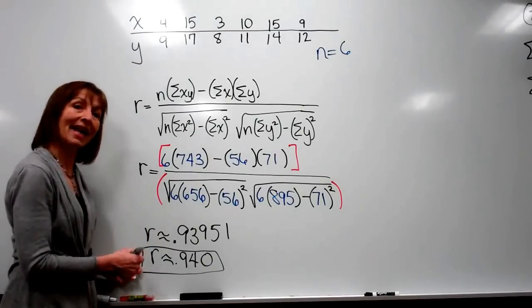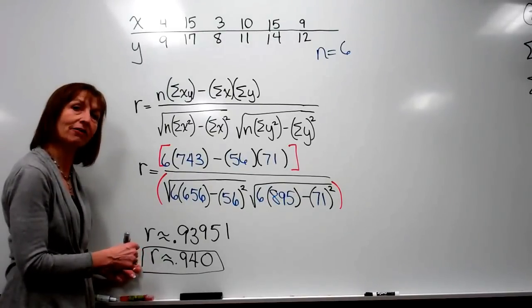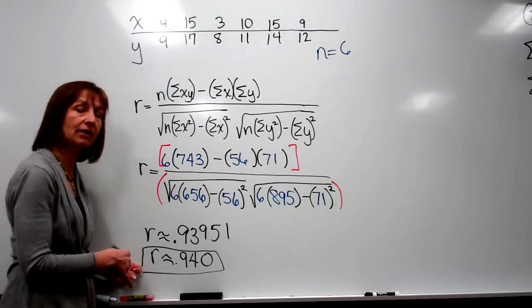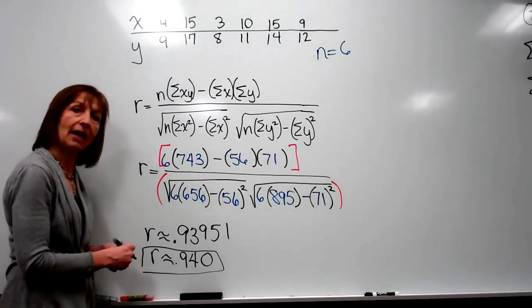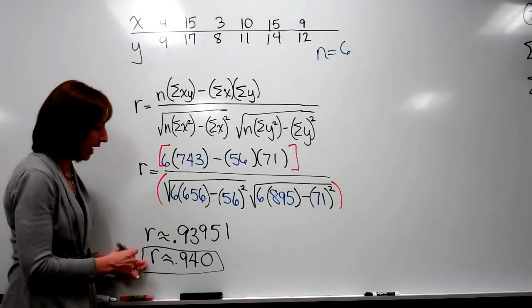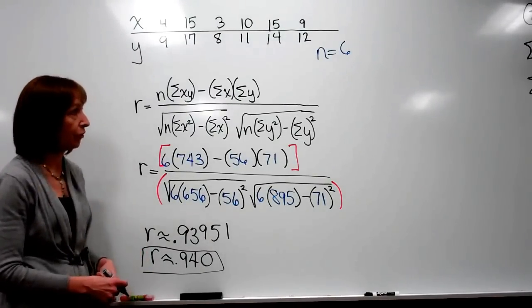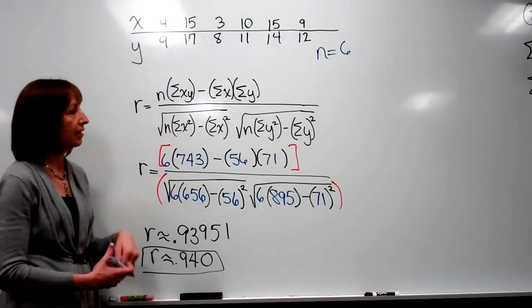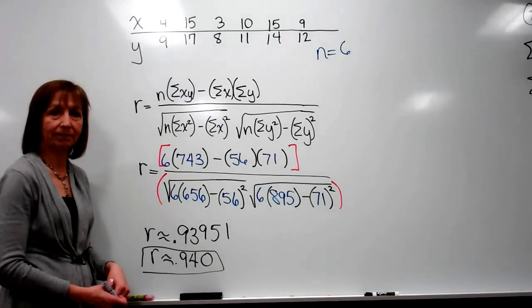In another segment, we'll look at how to test to see if that's significant enough at a given alpha level to determine that we can use that model in a prediction that would be dependable. But for now, this gives us our linear correlation coefficient using the formula to calculate it. Thank you.